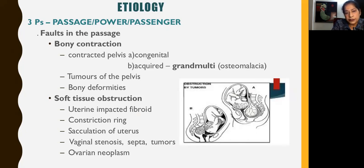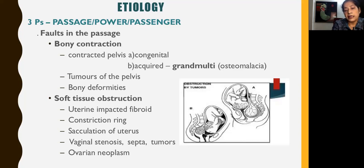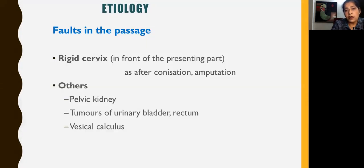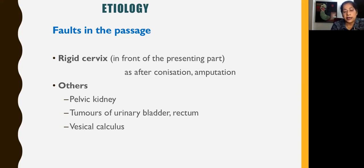Obstruction could be due to soft tissue like an impacted uterine fibroid — the head is unable to descend because the fibroid is in the way — or due to the presence of a constriction ring, sacculation of the uterus, vaginal stenosis, presence of septa and other vaginal tumours, and even an ovarian neoplasm can cause obstruction. Faults in the passage could further be due to a rigid cervix, which may occur because of conization or amputation surgery performed earlier. Other conditions like a pelvic kidney, tumours of the urinary bladder or rectum, and even a large vesical calculus can cause obstruction.